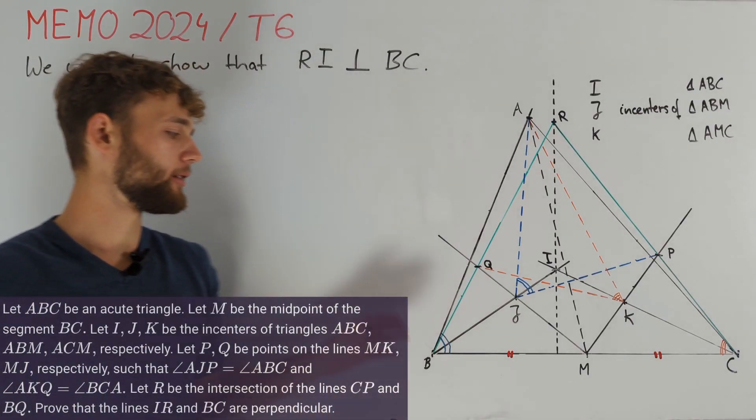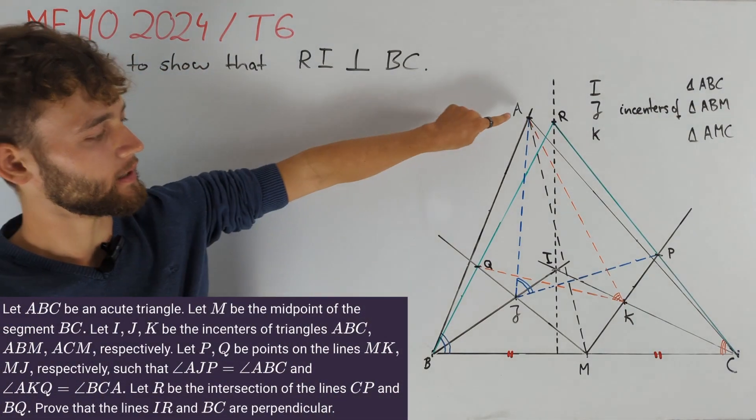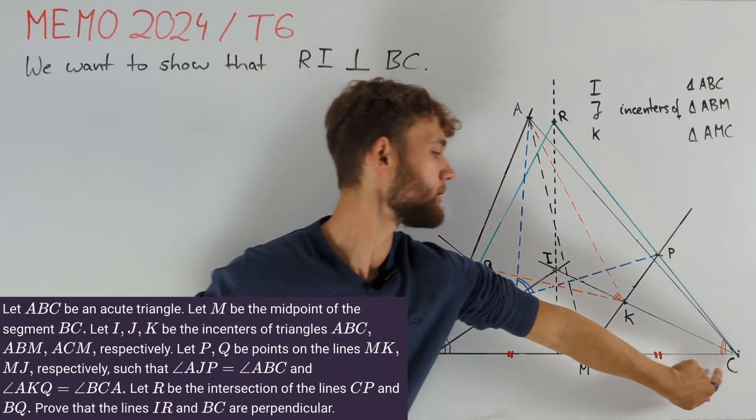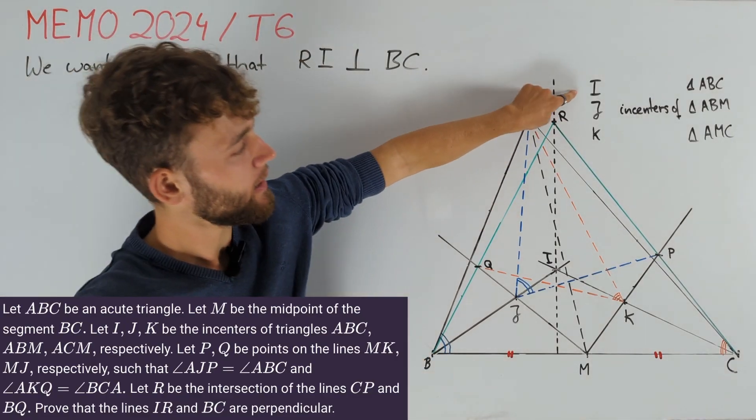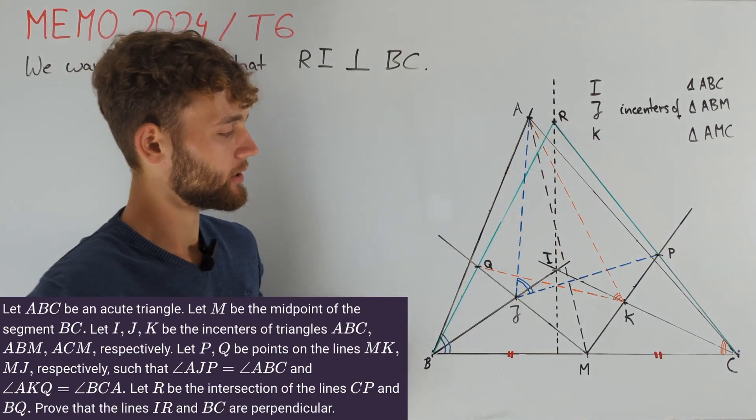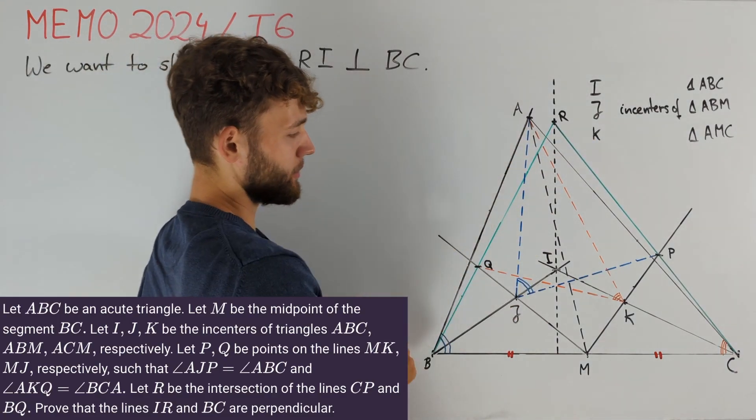Let's start by taking a look at the diagram. We have given a triangle ABC and consider the midpoint M of side BC. Now we define I, J and K such that I is the incenter of triangle ABC,